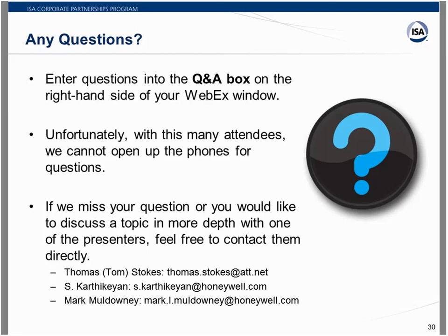An additional comment on SIL — Safety Integrity Levels 1 through 4: if you use the multivariable transmitter to measure your control parameter, you must use exactly the same type of device in your safety instrumented system. You have to compare apples with apples — you can't have one type of measurement device backed up by a completely different type of device.